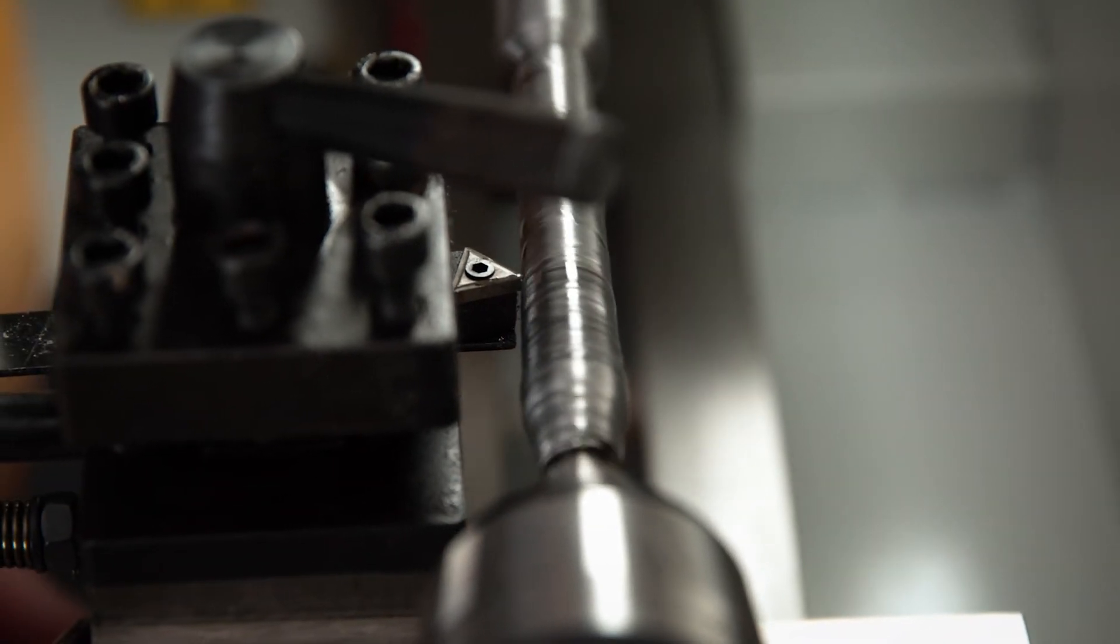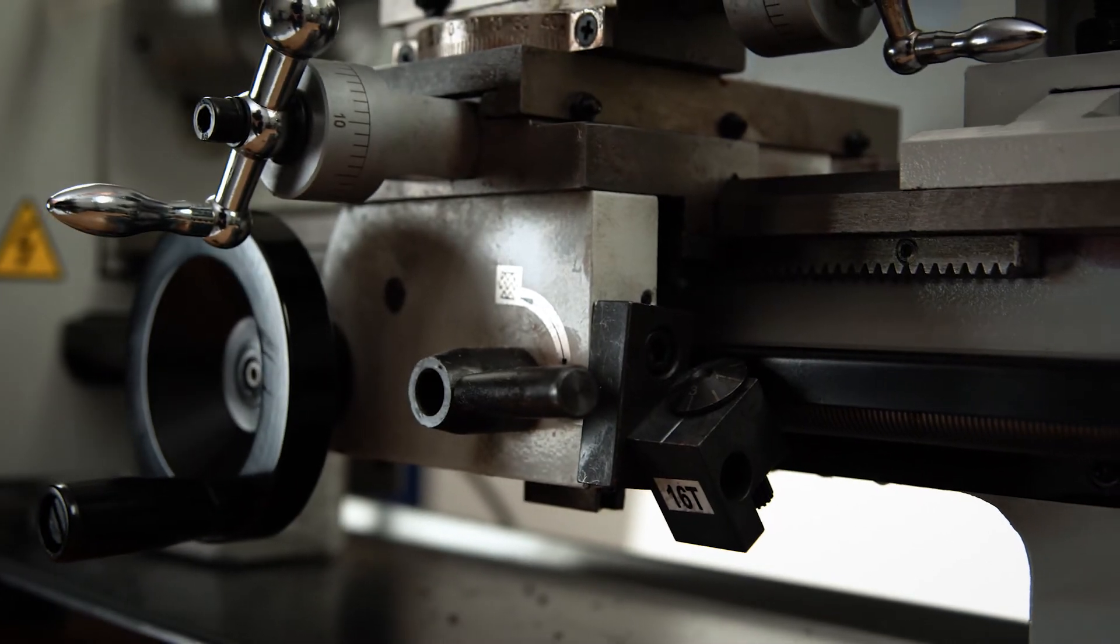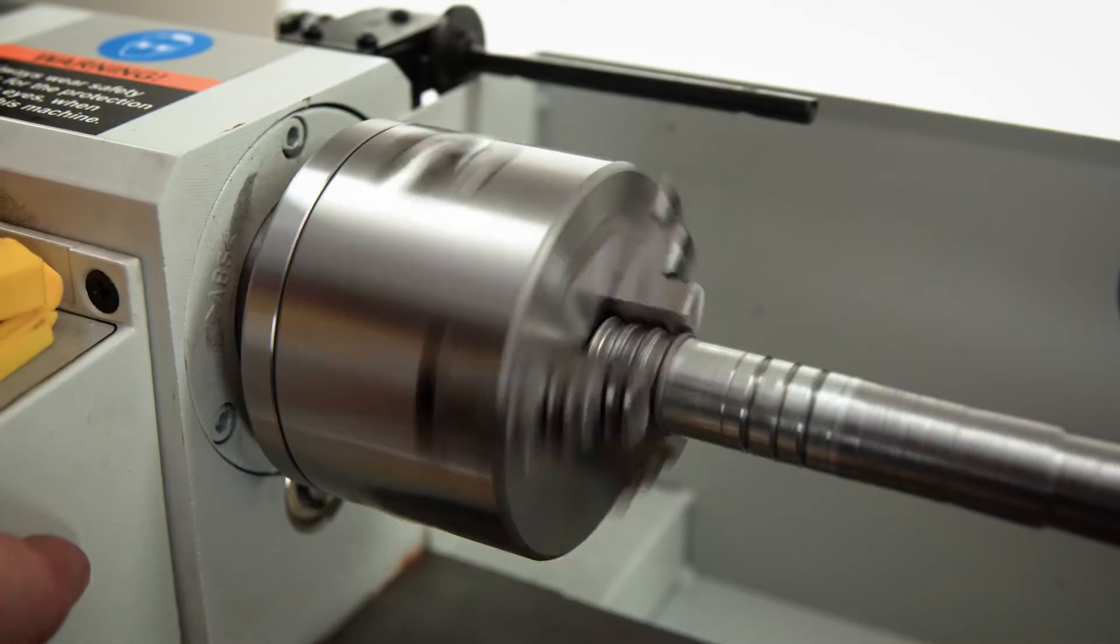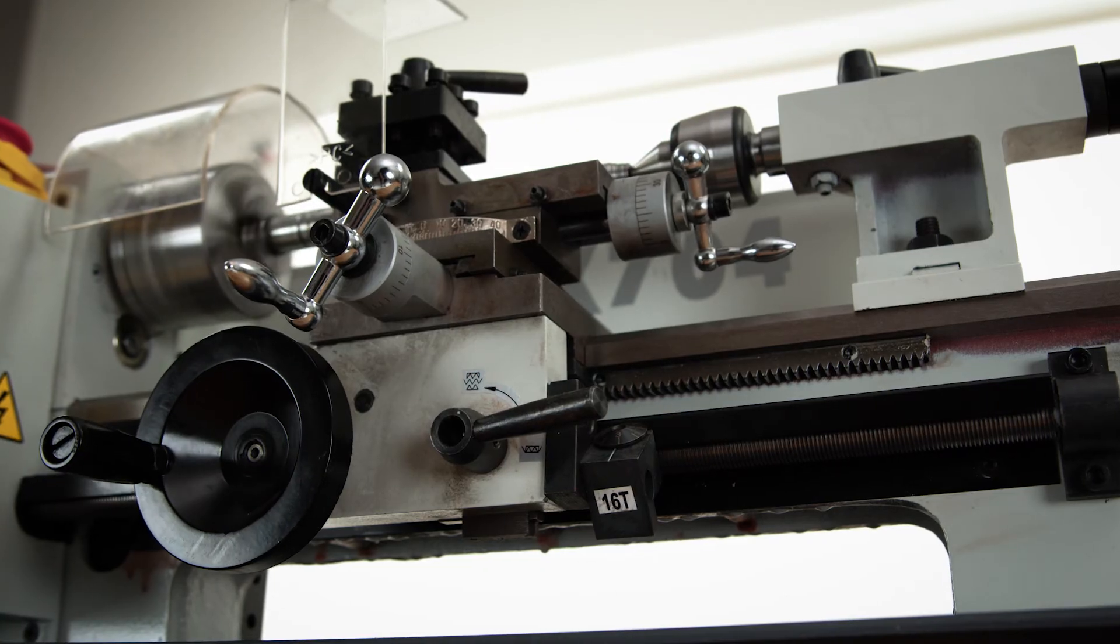The CX704 features a turret-style tool post that can hold up to four cutters, a powerful half-horsepower motor, and a precision ground cast iron bed.